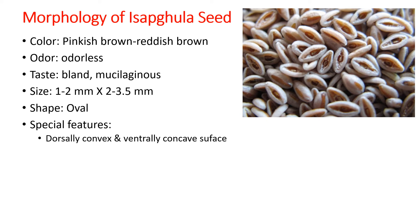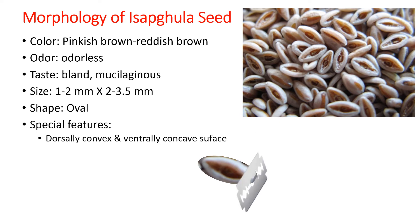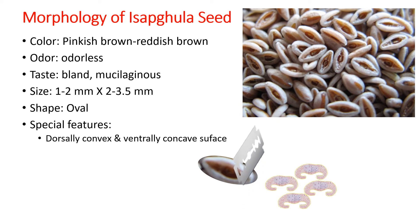For microscopy or determining the anatomical structure of the seed, the seed must be cut transversely. The seeds need to be soaked in water for a minimum of 2 to 3 hours, and preferably overnight, to soften the hard testa as well as the endosperm cells, making section-taking easier.